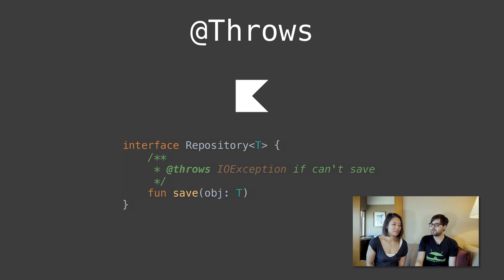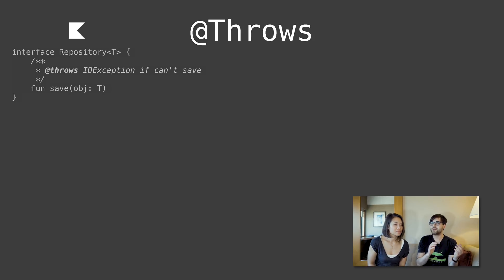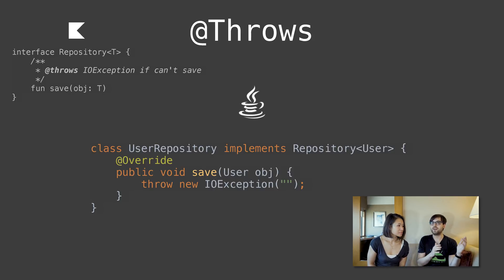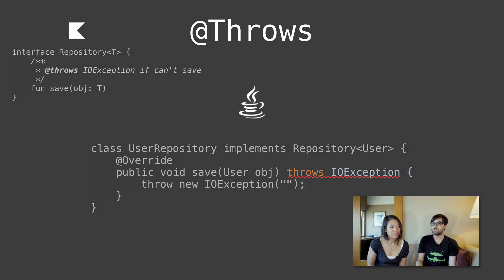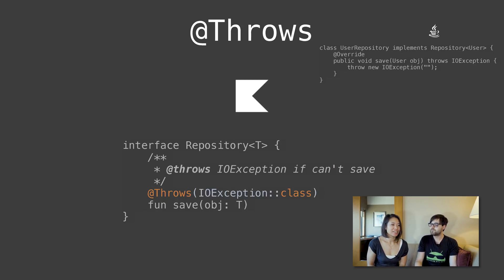For example, if you have an interface with an abstract method, and as the person writing that Kotlin interface you want it to throw some exception when something happens — if it's a checked exception and you go to implement it in Java, say you're a Kotlin library developer and your Java consumers go to implement it, they go to throw IOException and it's going to say you can't throw that. And if you add it to your method header, it says that's not an override anymore. So it totally breaks, and you have to remember the @Throws annotation and annotate that.